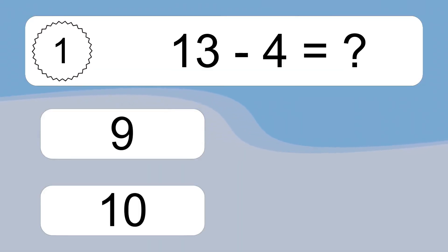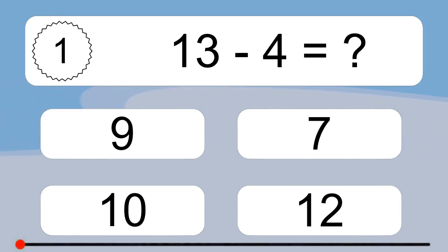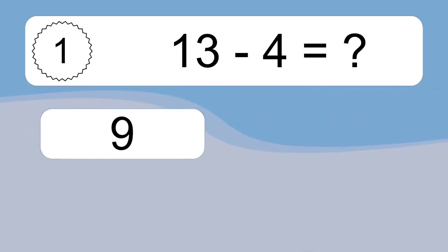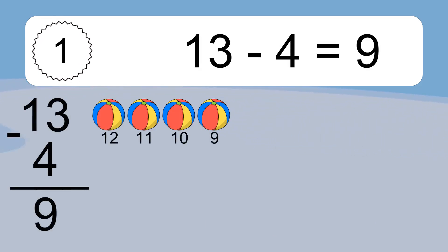13 minus 4 equals what? 13 minus 4 equals 9. Let's count it: 12, 11, 10, 9.